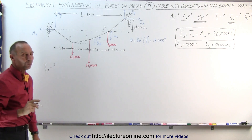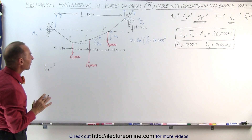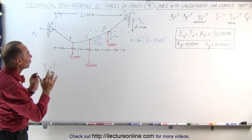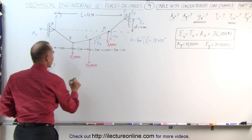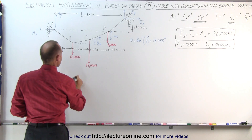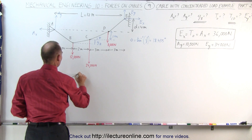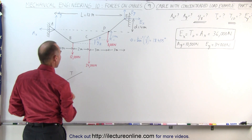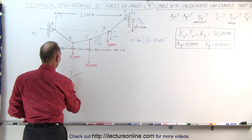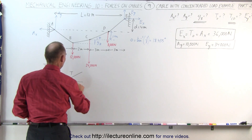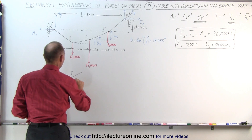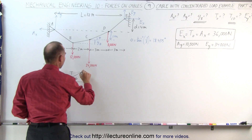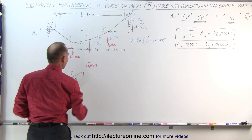To do that, we're going to draw a triangular shape of the forces acting on that section. We can say that we have the tension here, we have the horizontal tension here, which is T sub-naught, and we have the angle theta. So there's the triangle.